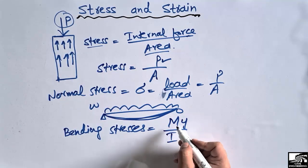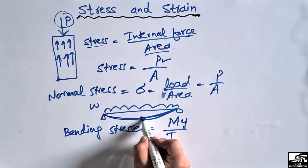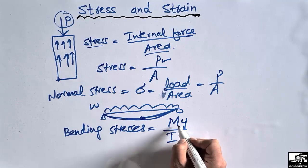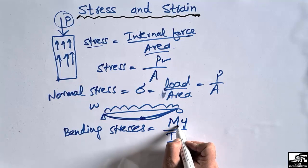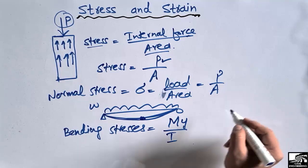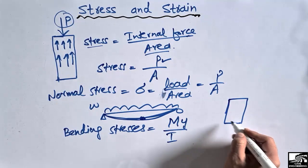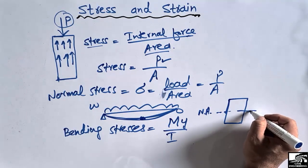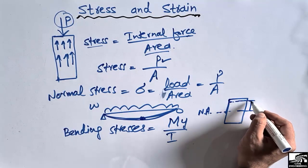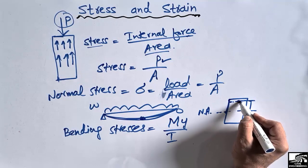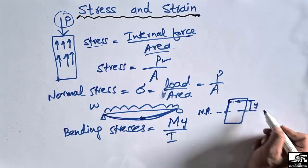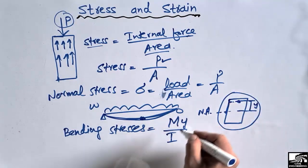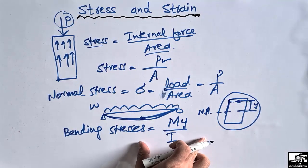The formula for bending stress is M·Y divided by I, where M is the bending moment at the point where we want to find the stress, Y is the distance from the neutral axis to the point where we want to find the stress, and I is the moment of inertia of the cross-section of the beam.